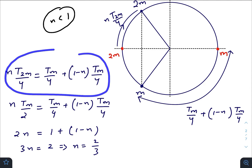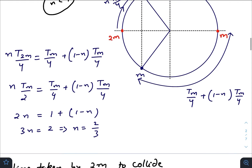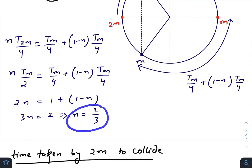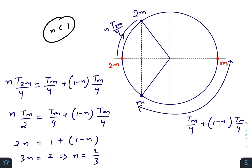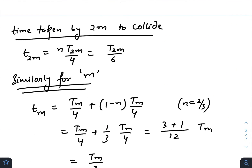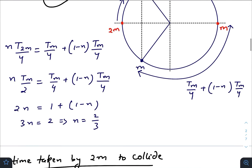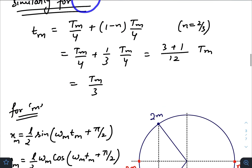Equating these two time values — n × (T_2m/4) = T_m/4 + (1 − n) × (T_m/4) — we get the value of n as 2/3. From here we can calculate the actual time taken by mass 2m and mass m to reach the collision point. For 2m, the time taken is one-sixth of its time period. For m, substituting n = 2/3, the time taken is T_m/3, one-third of the time period.